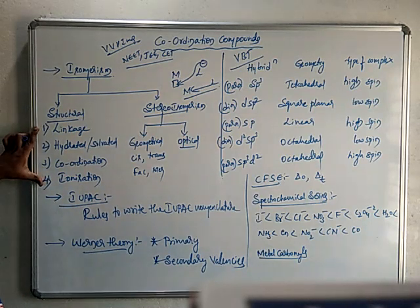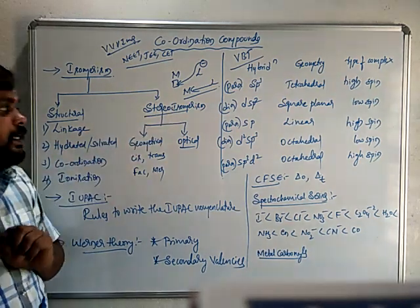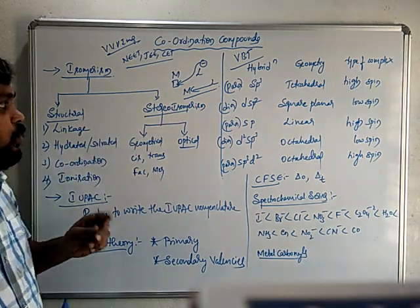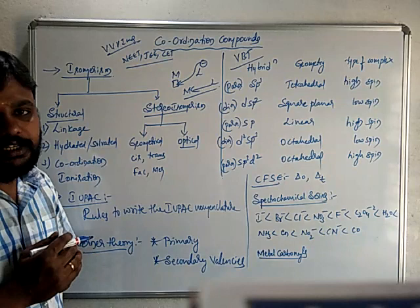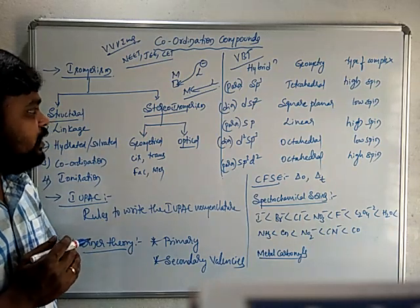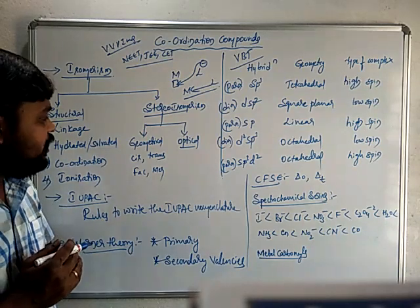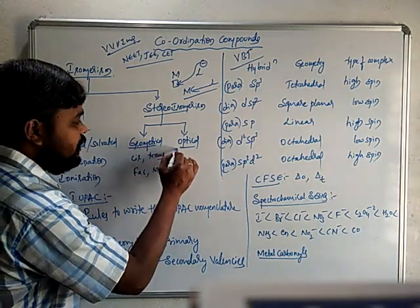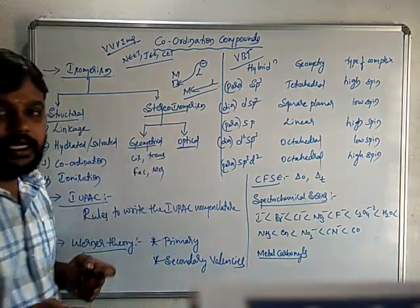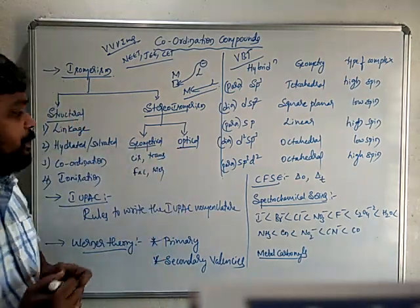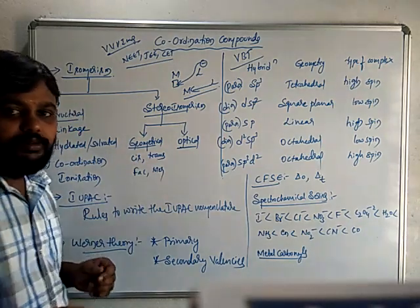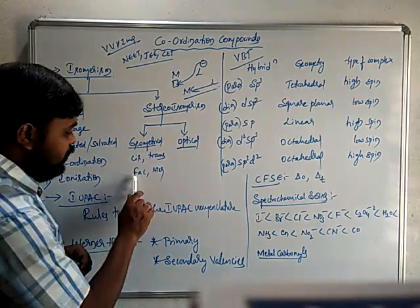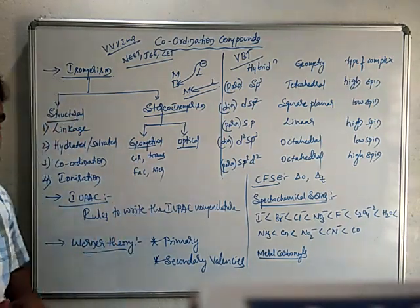You are very familiar with these four structural isomerisms from PUC. In stereo isomerism, the spatial arrangement differs in the compound, causing isomerism. Stereo isomerism is further classified into two types: geometrical and optical. Geometrical isomerism is due to the presence of cis and trans isomers, or facial and meridional isomers.